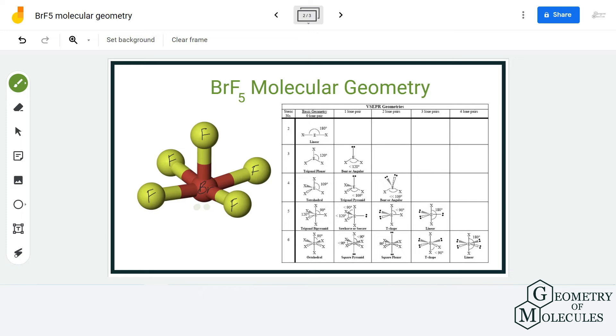Which means it has six regions of electrons, and hence the steric number for bromine will be six. So when you refer to this table, it shows that the molecules with steric number six and one lone pair, because this has one lone pair over here, have square pyramidal molecular geometry.